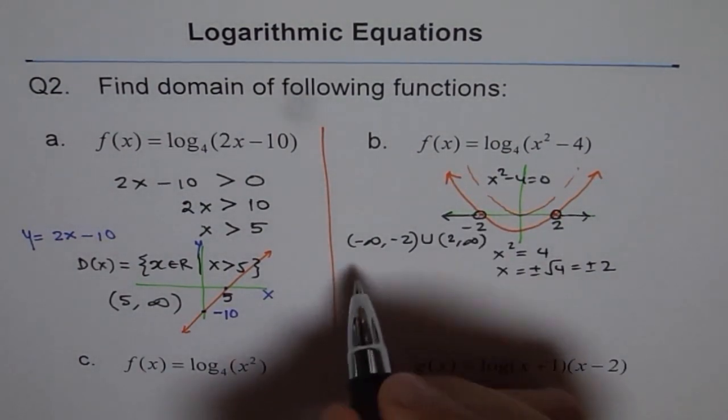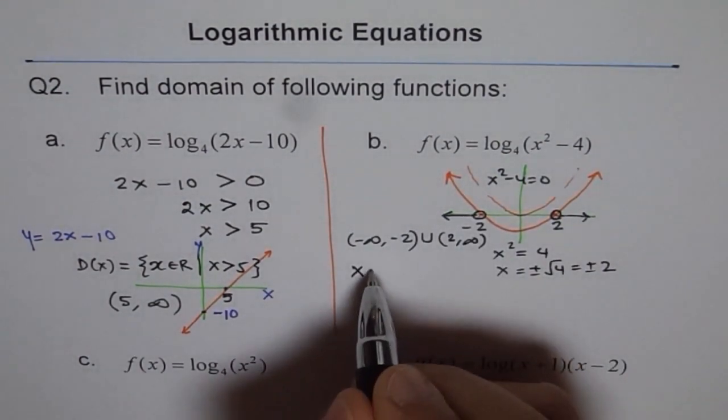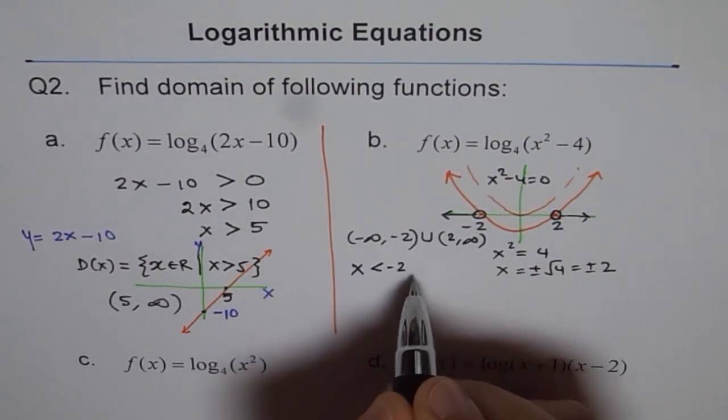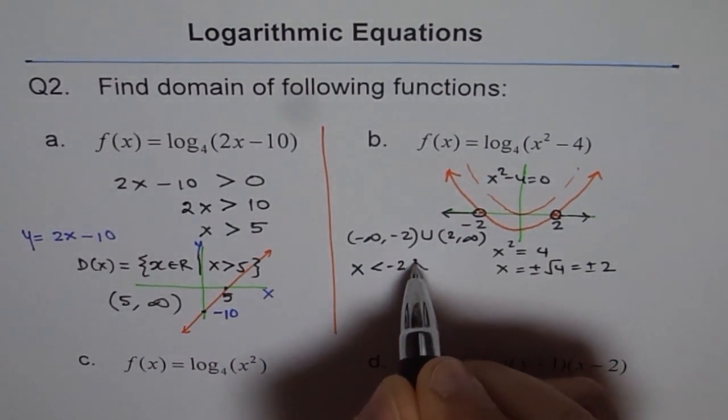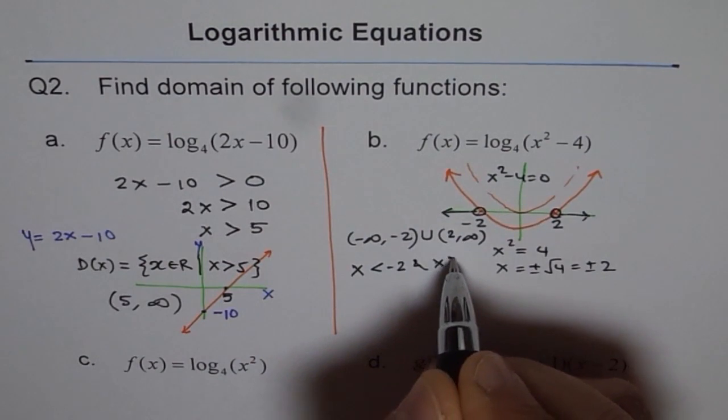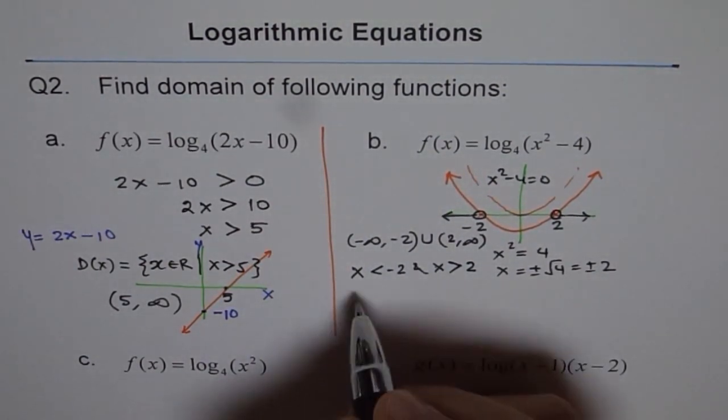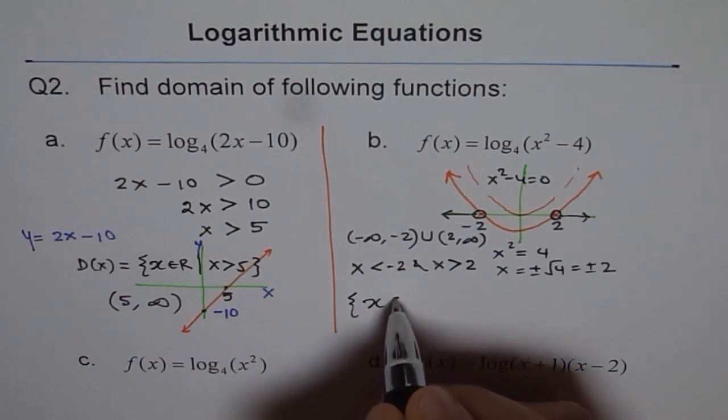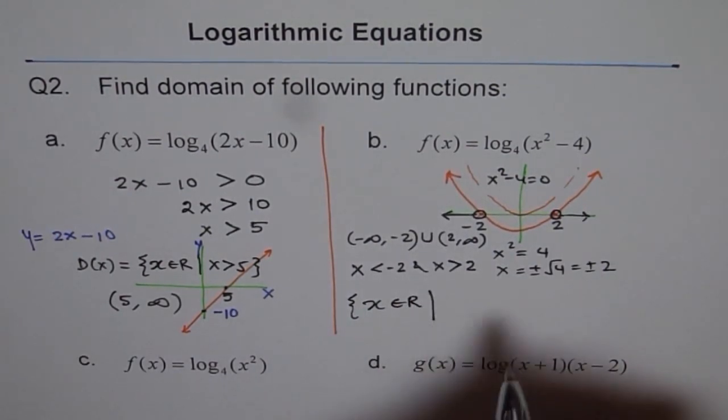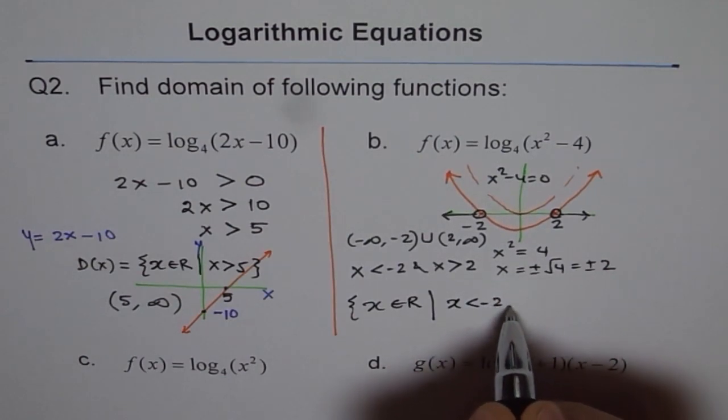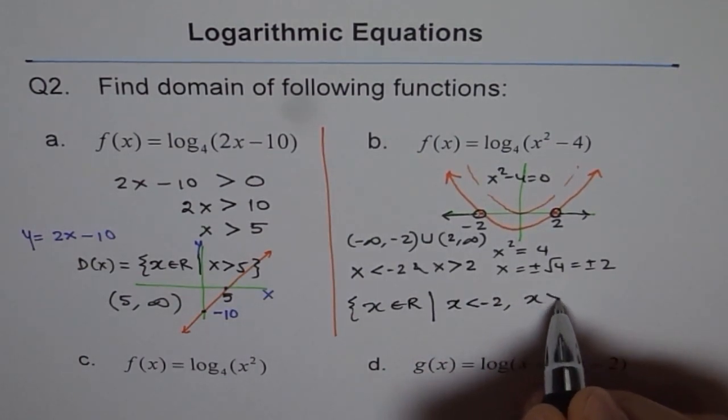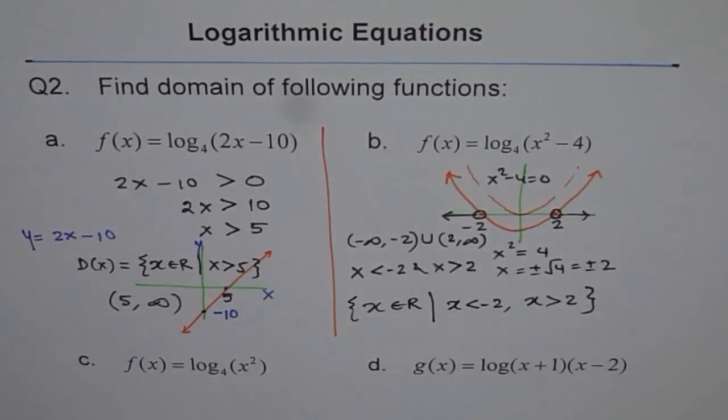Or you could write this as x < -2 and x > 2. That could be another way of writing. And in set form, you can write x belongs to real numbers so that x < -2 and x > 2. These are different ways of writing the domain of the given function.